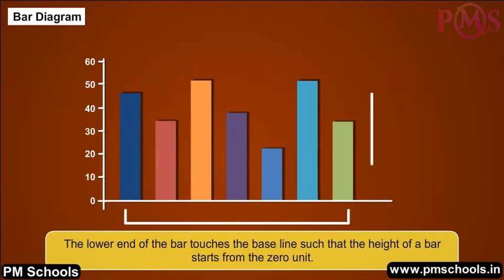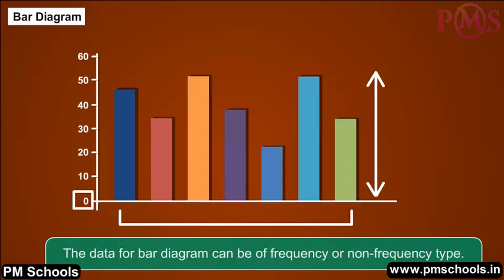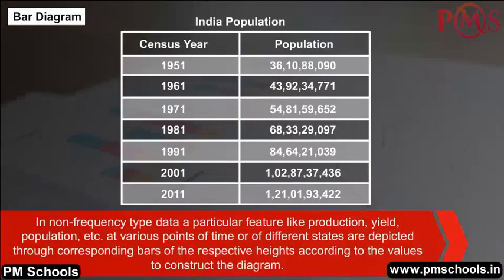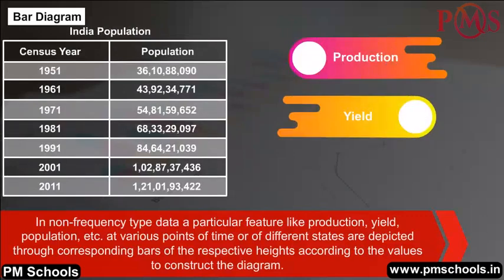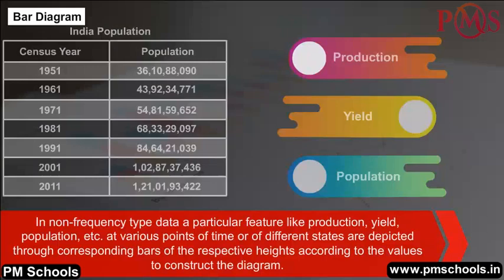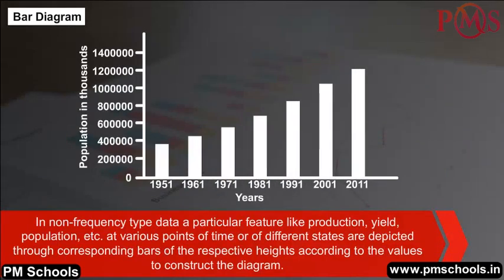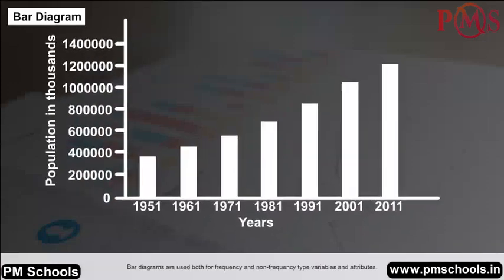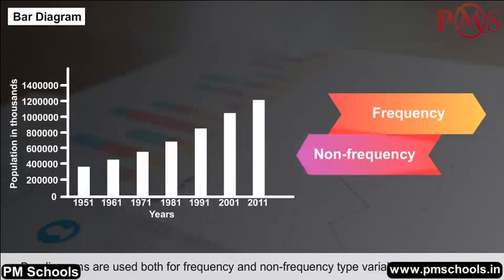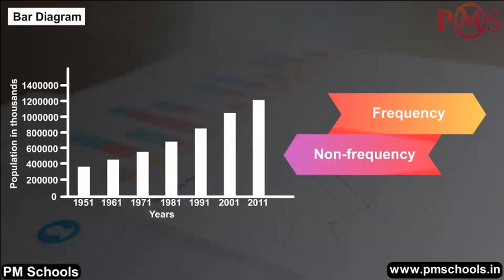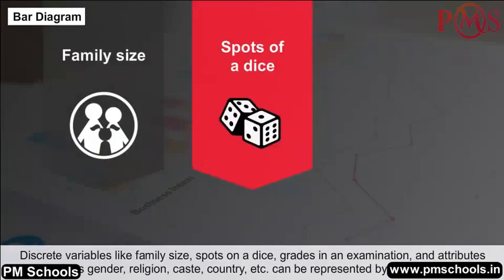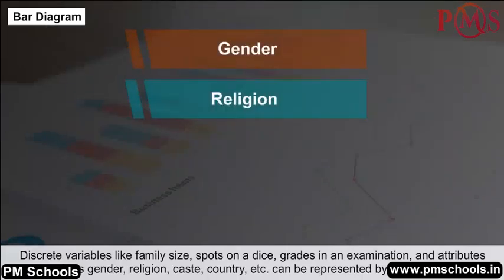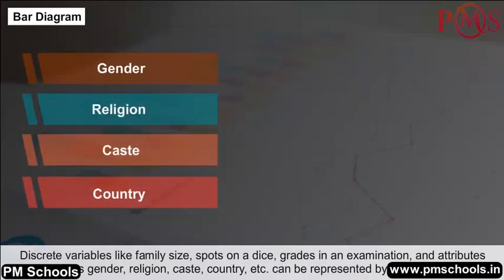Simple bar diagram details: The height or length of the bar describes the magnitude of data. The lower end of the bar touches the baseline such that the height starts from zero. Data for bar diagrams can be of frequency or non-frequency type. In non-frequency type, features like production, yield, and population at various points of time are depicted through bars. Bar diagrams are used for discrete variables like family size, grades in an examination, and attributes such as gender, religion, caste, and country.